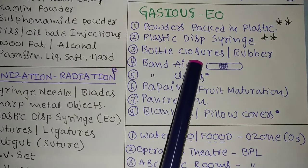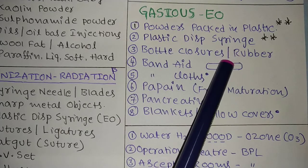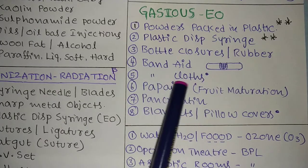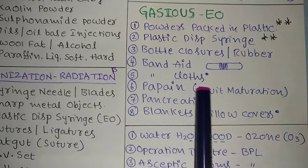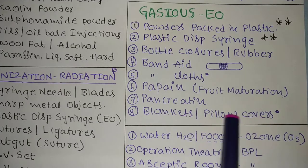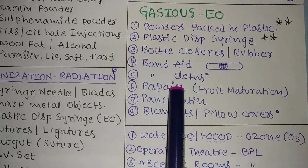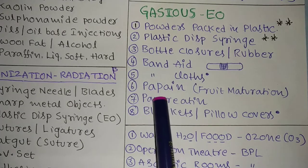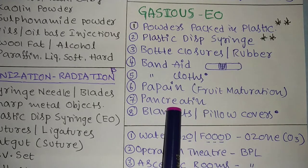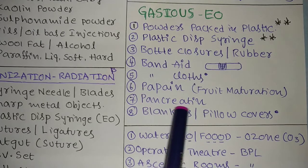Bottle closers and rubber closers can use gaseous sterilization (autoclave is also an option for rubber). Bandaids like Handyplast use gaseous sterilization only. For cloths — bandage cloths, blankets, pillow covers — gaseous sterilization only. Papain and pancreatin also use gaseous sterilization; remember this because ethylene oxide is also used for fruit maturation, and papain comes from fruit (papaya).